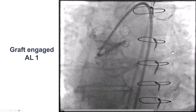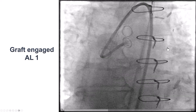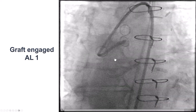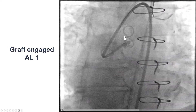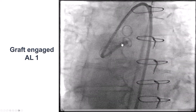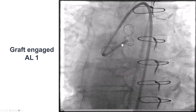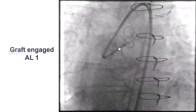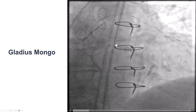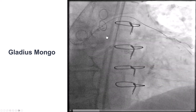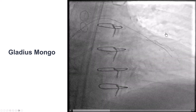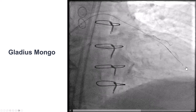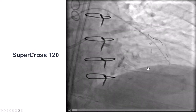We then decided to try to go through the occluded bypass graft. This is the origin of the occluded saphenous vein graft to the LAD. It was engaged with an AL1 guide. We used a Gladius Mongo guide wire, and that made rapid progress distally into the distal vessel.